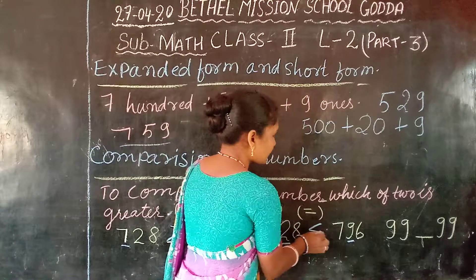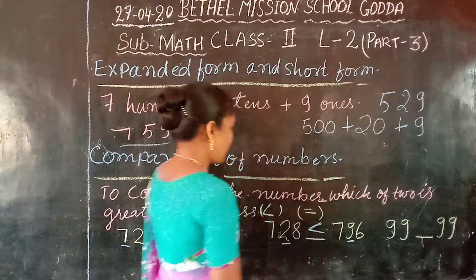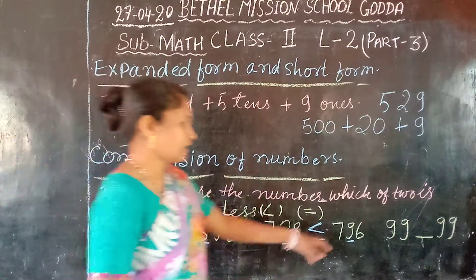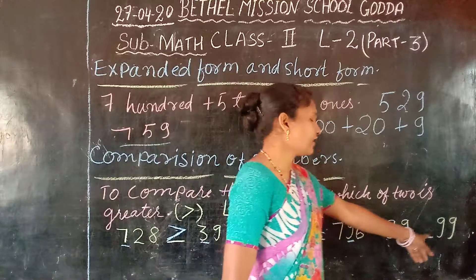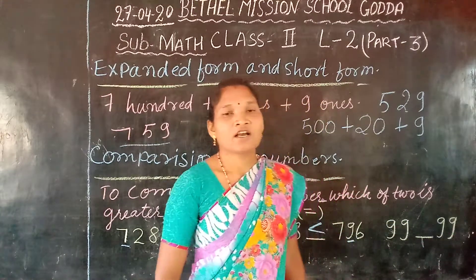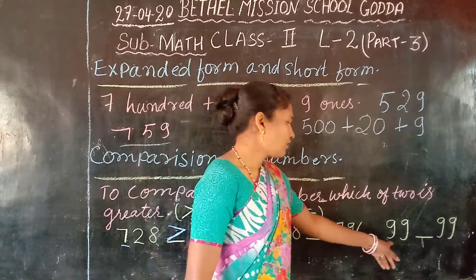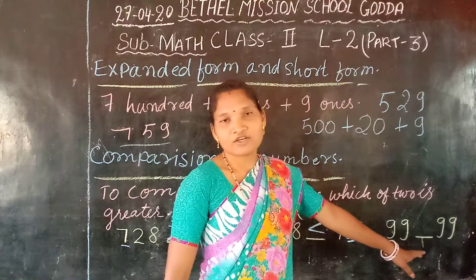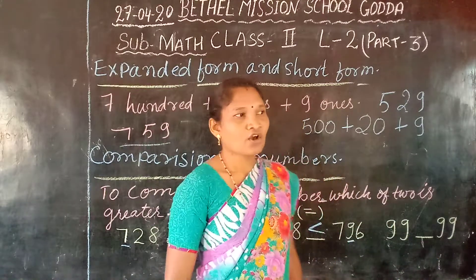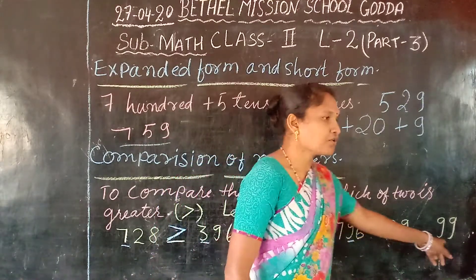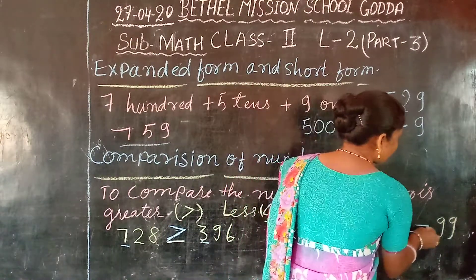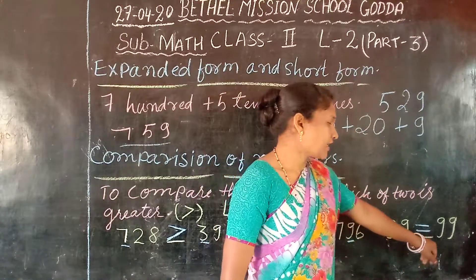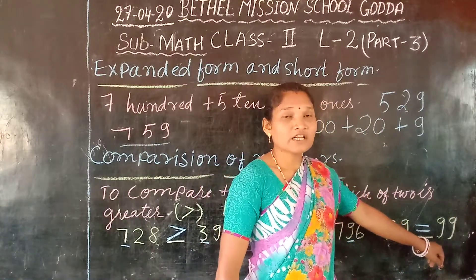This is the sign of less than and this is the sign of greater than. Nine hundred and ninety nine and nine hundred and ninety nine — can you see any difference between these two numbers? There is no difference, so these two numbers are equal. This is the equal sign.